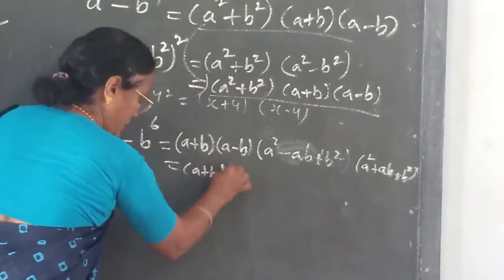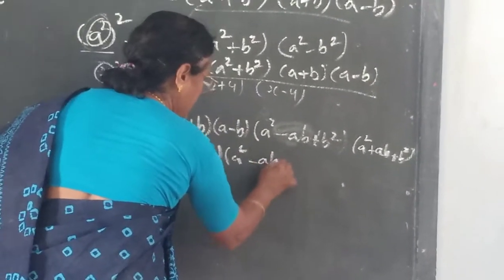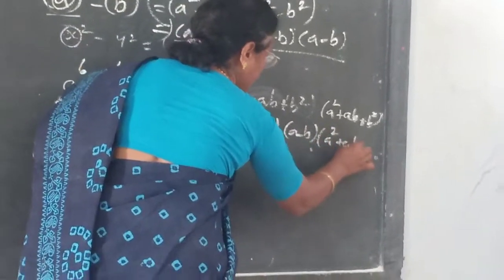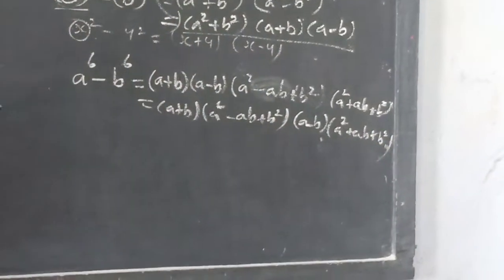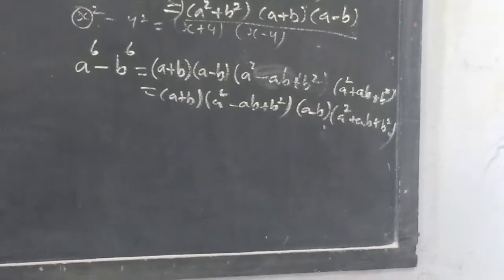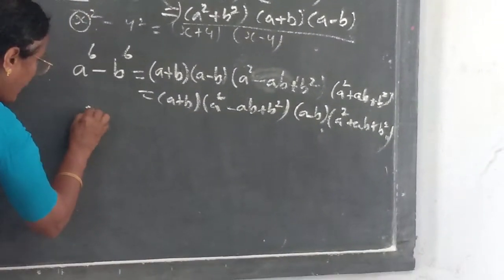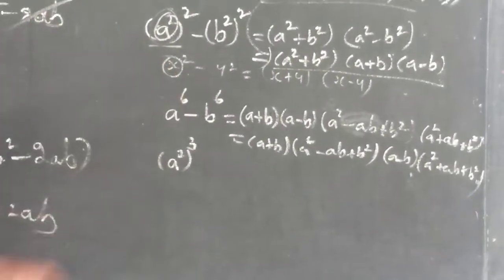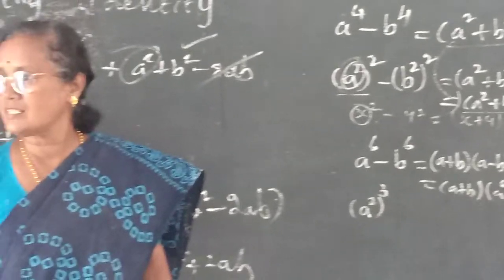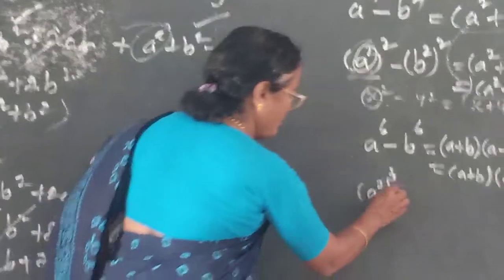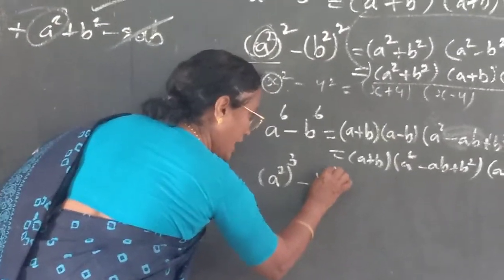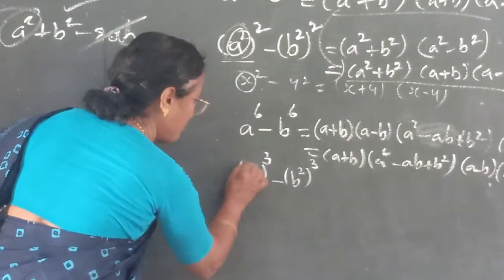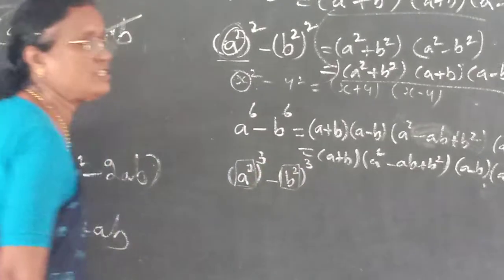You can write a⁶ as (a²)³, because two threes are 6. Similarly b⁶ as (b²)³. So this is in the form x³ minus y³, where x = a² and y = b².